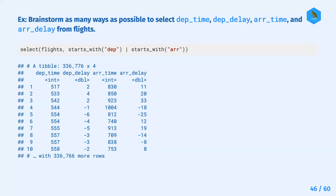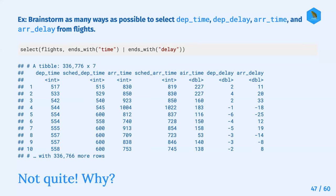The other option we talked about was using ends_with() instead of starts_with(), but that one doesn't give the same result. The question is: why doesn't this option work? It matches too many columns - there are more columns that match those descriptors than we're interested in.